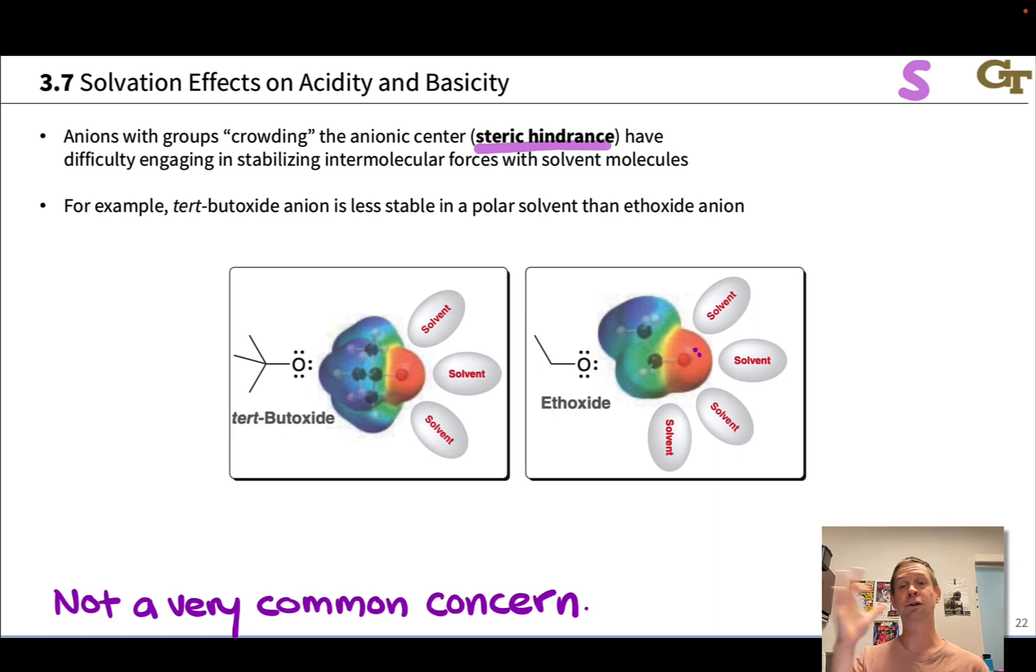And they provide steric hindrance for solvent molecules to get close to the tert-butoxide anion when it's dissolved in a solvent. For example, it's very commonly dissolved in its conjugate acid, tert-butanol. And the bulky tert-butyl group provides quite a bit of hindrance for solvent molecules to get close to that molecule. And so this actually is a destabilizing effect, since fewer solvent molecules can engage in intermolecular forces with relatively bulky anions.